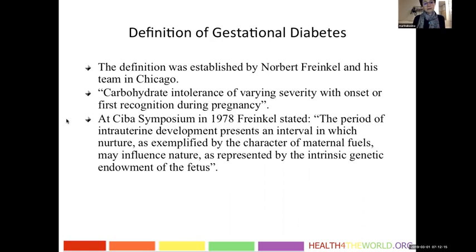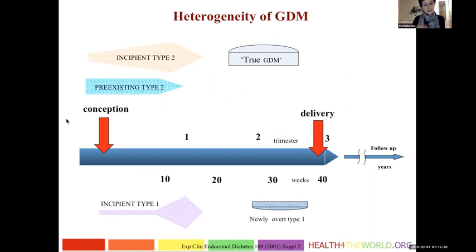Gestational diabetes can be heterogeneous. It can represent incipient type 2 diabetes, pre-existing type 2 diabetes recognized at conception, incipient type 1 diabetes not recognized prior to pregnancy, newly overt type 1 diabetes precipitated by pregnancy, or true gestational diabetes. All these types of diabetes can be first seen and recognized during pregnancy.